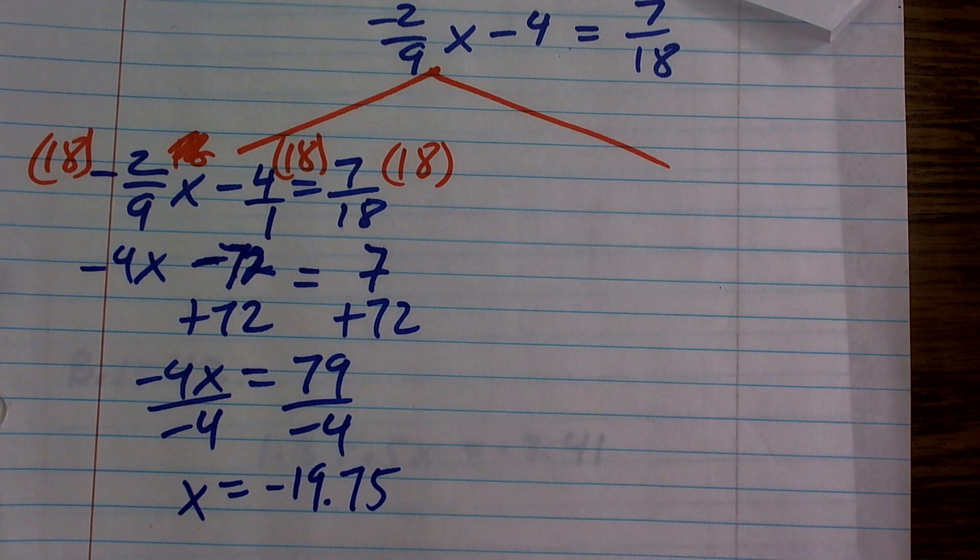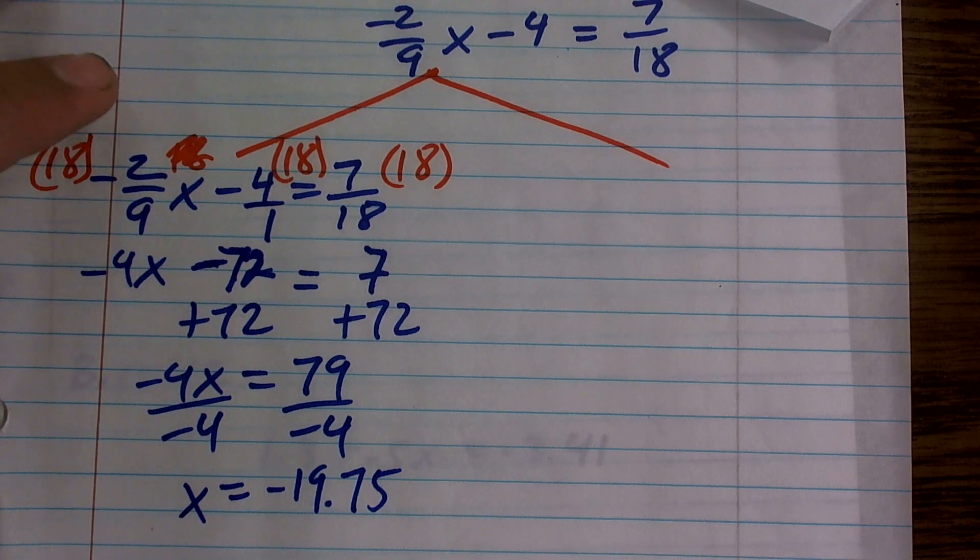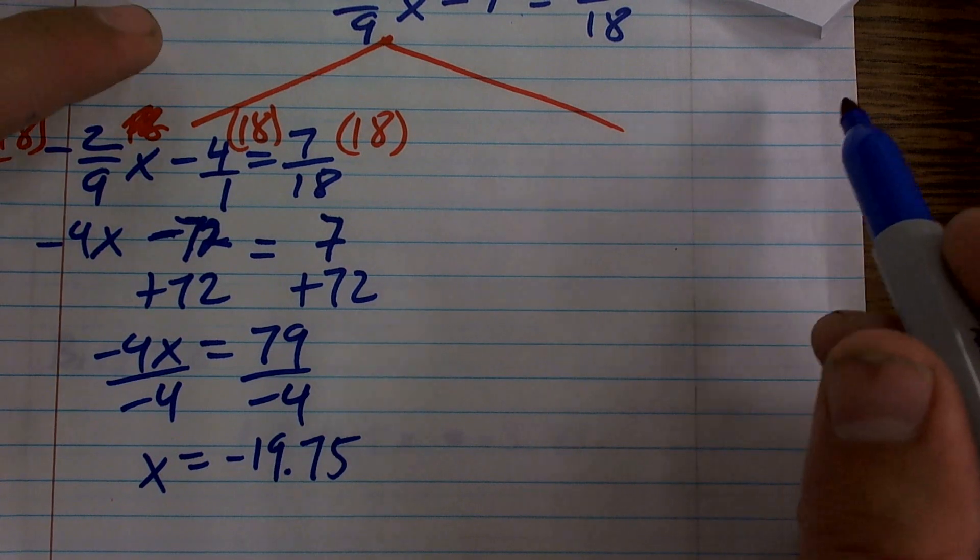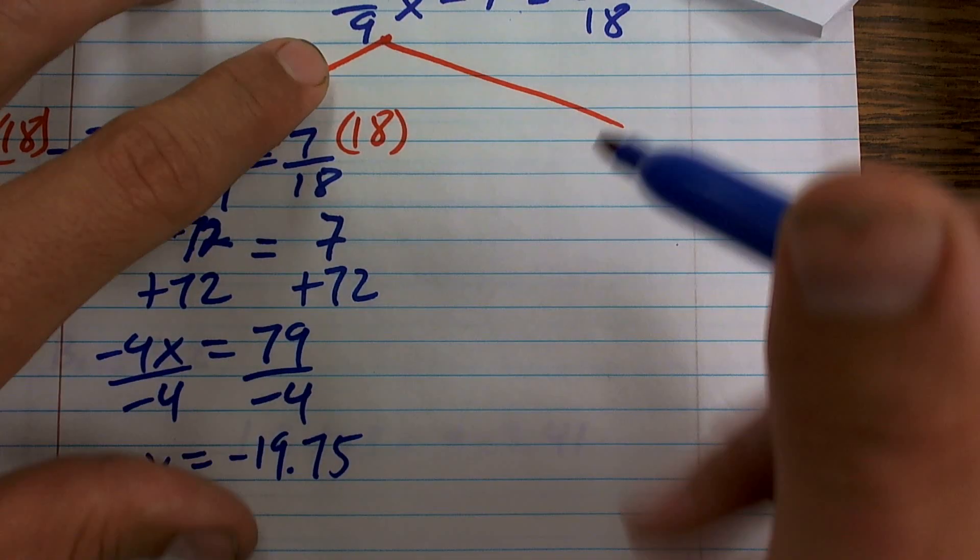So that is one way to do it, all right? Now, and that way is perfectly awesome to use. And if it makes sense to you, then use it. If you want to watch another way, I got three minutes. I'll try to make this one in less than two minutes. So the other way is whenever you have fractions...